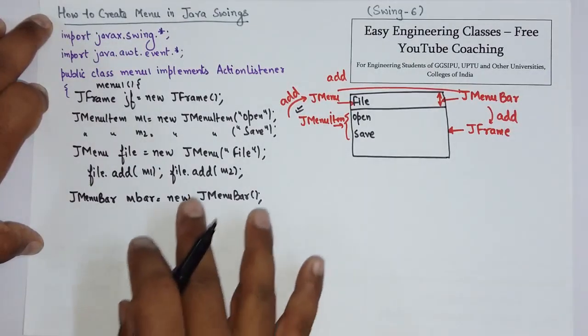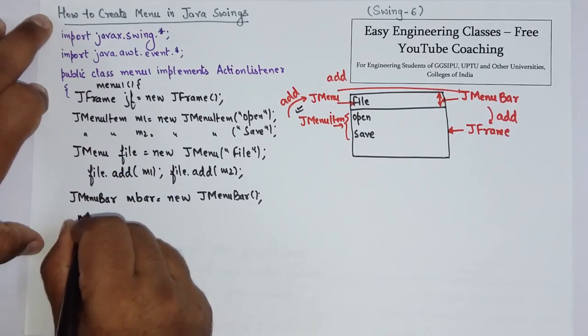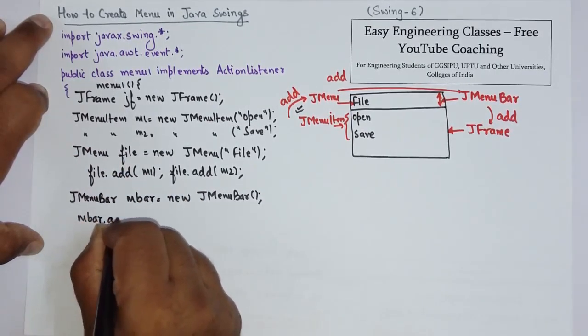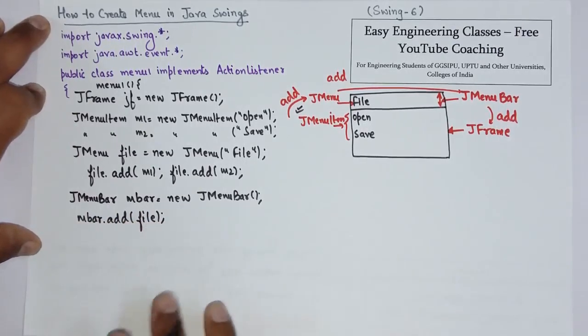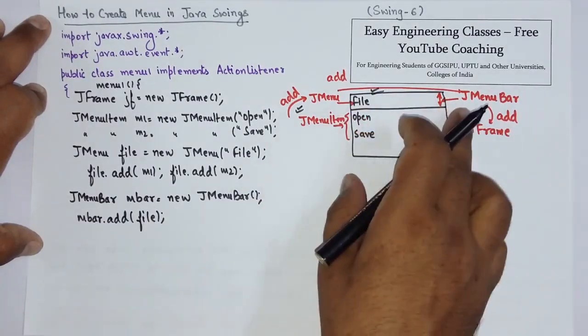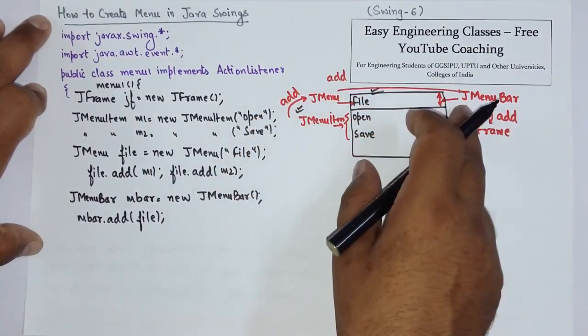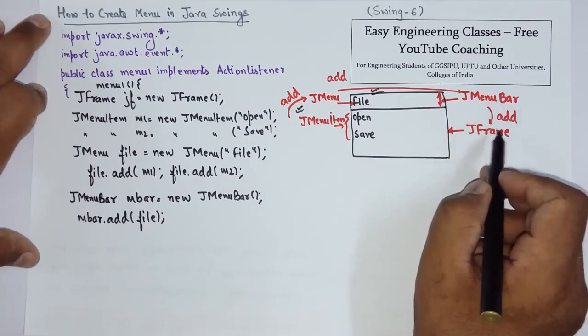Now I am going to add this menu. So I am going to write mbar.add file. So this part is also completed. Creation of menu bar and adding of menu to the menu bar. Now finally I have to just add this menu bar to the frame.